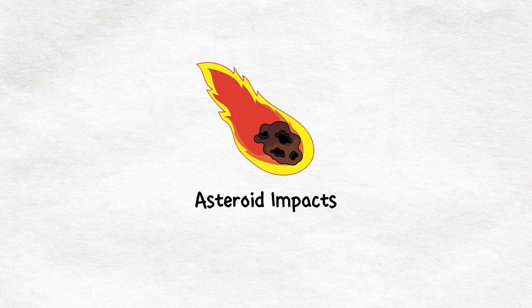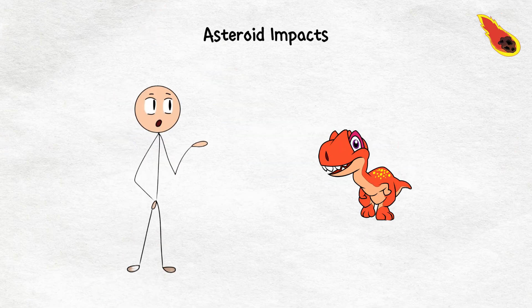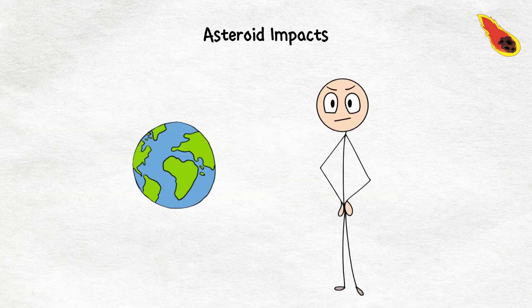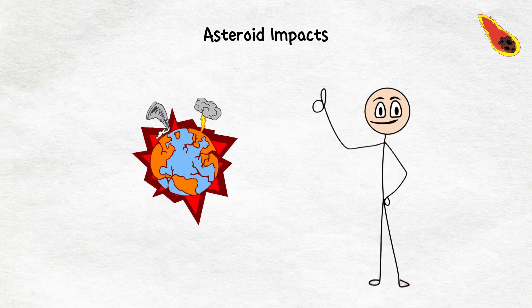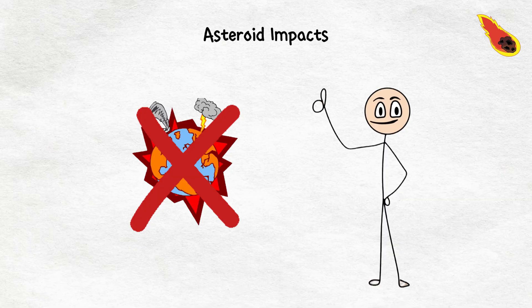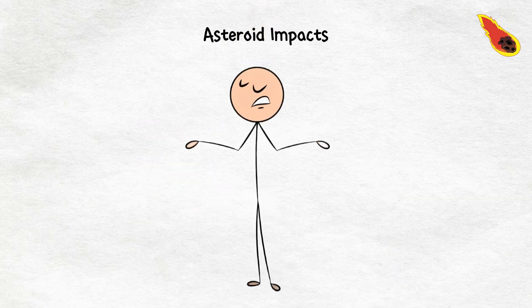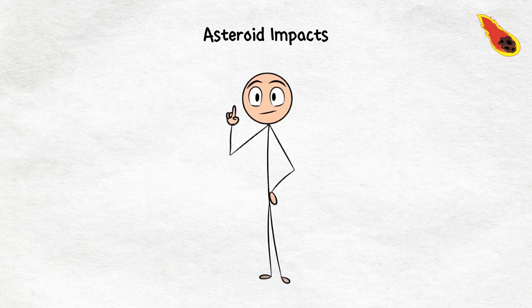Asteroid impacts. You have probably heard about the one that wiped out the dinosaurs 66 million years ago, the cosmic knockout punch that changed Earth forever. The good news is that right now there aren't any asteroids on a collision course with Earth. So, for the time being, we can breathe easy. But the bad news?